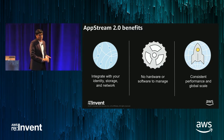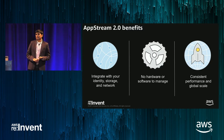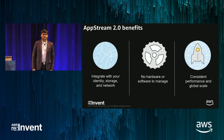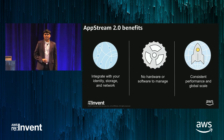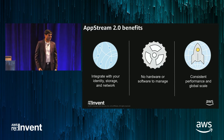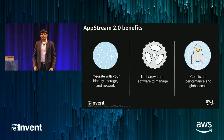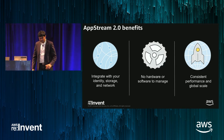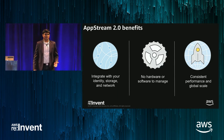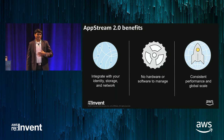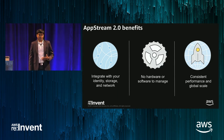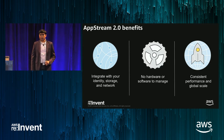Another key benefit for customers is around how it integrates with existing IT environments. It connects to a customer's existing Active Directory, connects to existing storage mechanisms, and allows them to use their existing security model around how they have secured all their applications and data within their network. Along with all this, there is no hardware and software to manage — you can simply get started with AppStream by importing your applications and then scale it out to match the number of users.